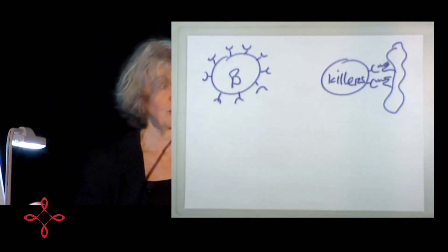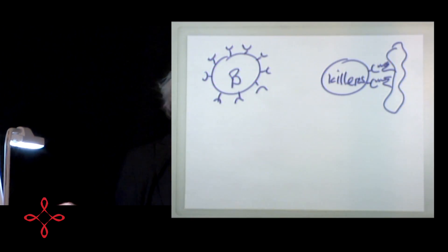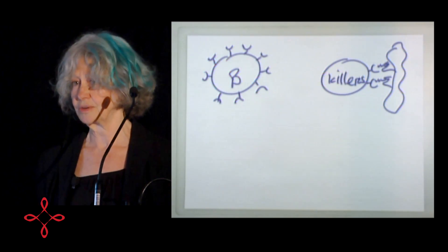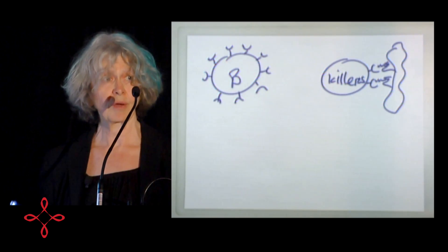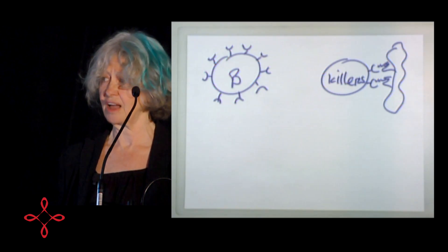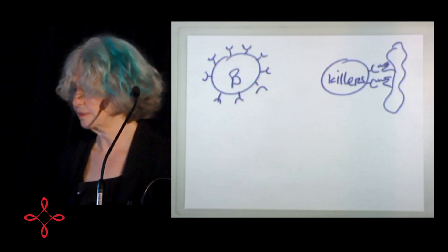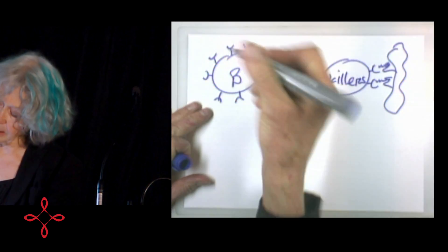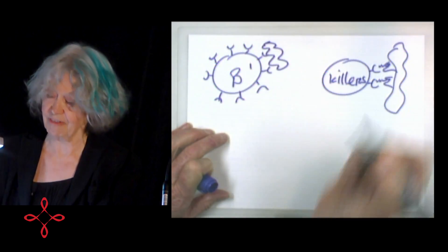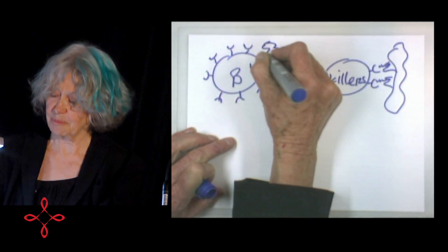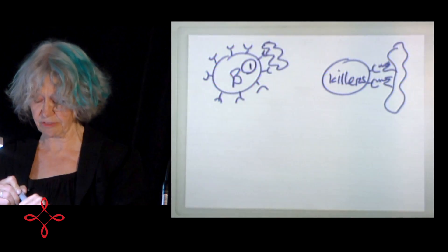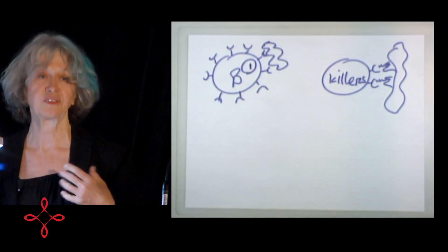That got a Nobel Prize, and it lasted until 1969 when Peter Brecher and Mel Cohn at the Salk Institute in San Diego modified it by adding another cell and another signal. The signal that Burnett had suggested we call signal one — when a B cell sees, say, a virus, the binding of its antibodies gives it signal one. And Burnett said that was enough to get it to divide and start making antibody.